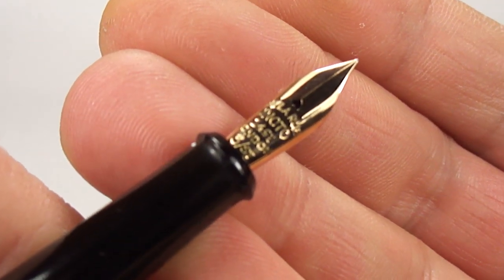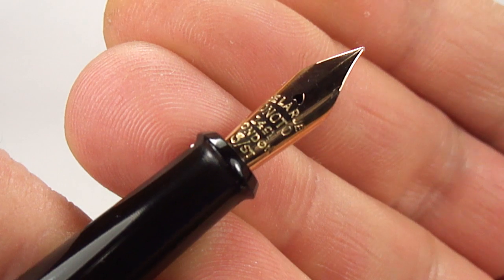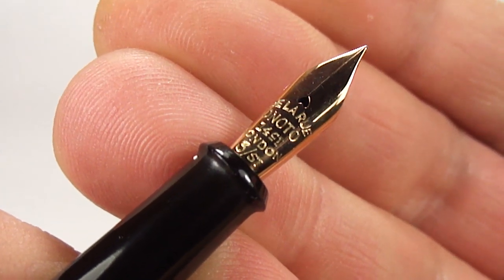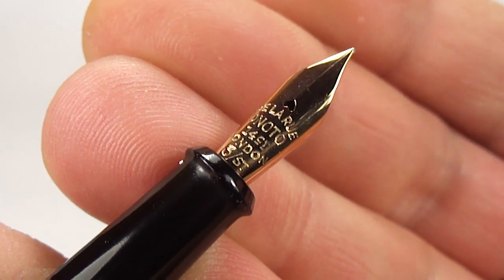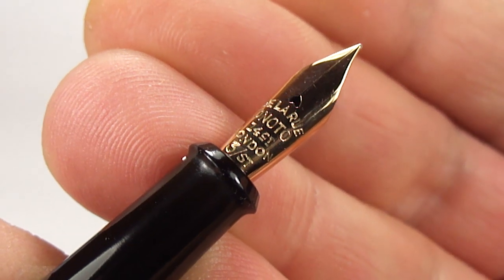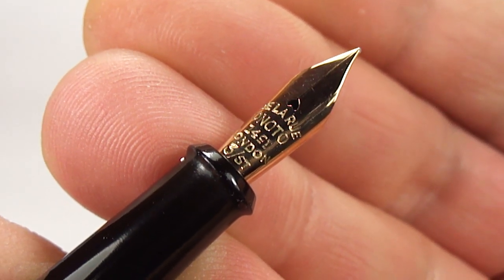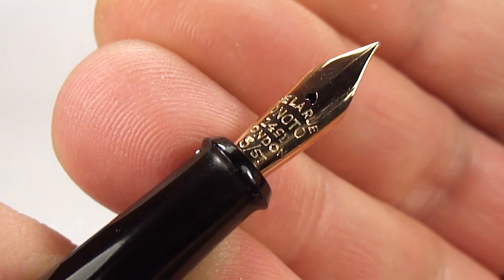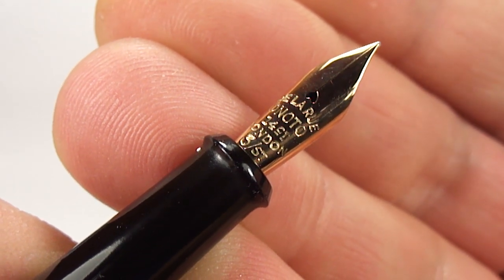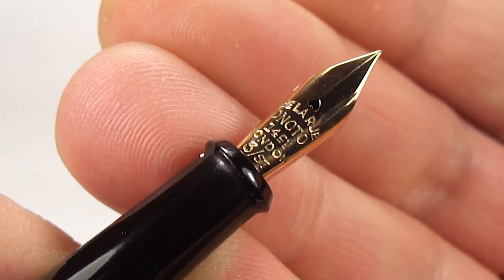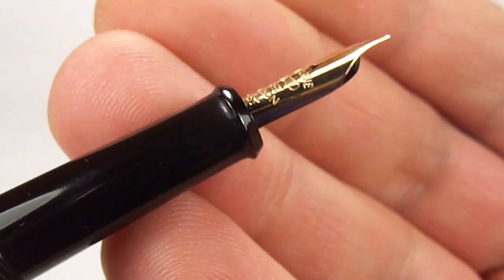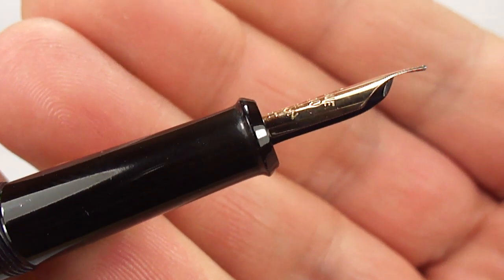Now, if we show you the nib, again, let's keep it nice and still for you. And what we've got here is a gorgeous Delarue Onoto 14k gold London 3-ST gold nib. Okay. Now, if we give you a sideways view there, you can see the sideways.